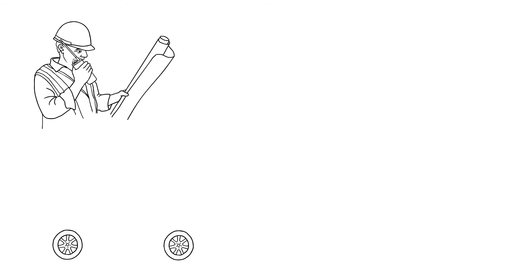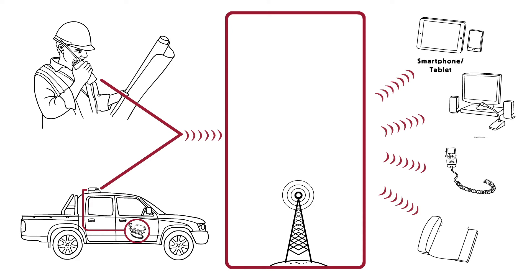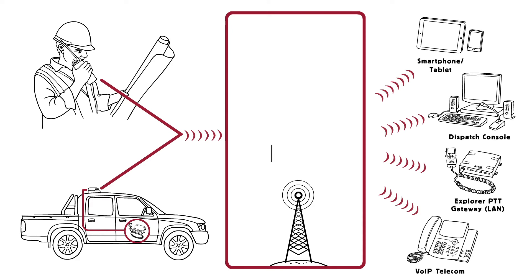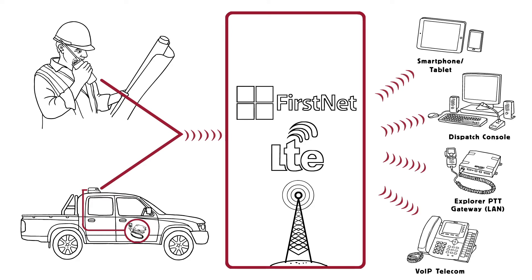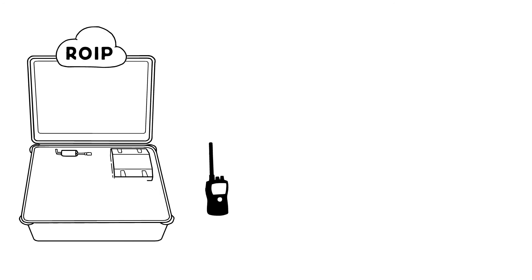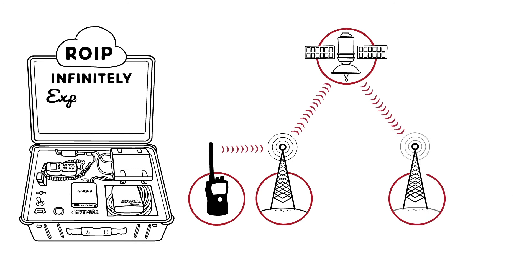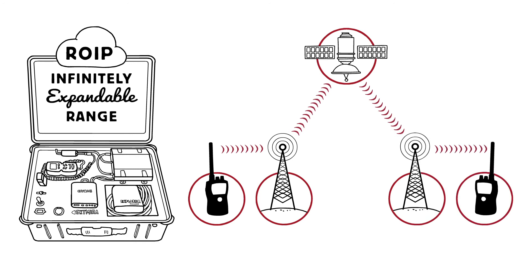ROIP converts analog or digital push-to-talk voice into Internet-friendly IP packets, which can be sent across town or around the world using LTE, FirstNet, satellite, and Wi-Fi networks. Essentially, ROIP serves as a virtual radio repeater with an infinitely expandable range.